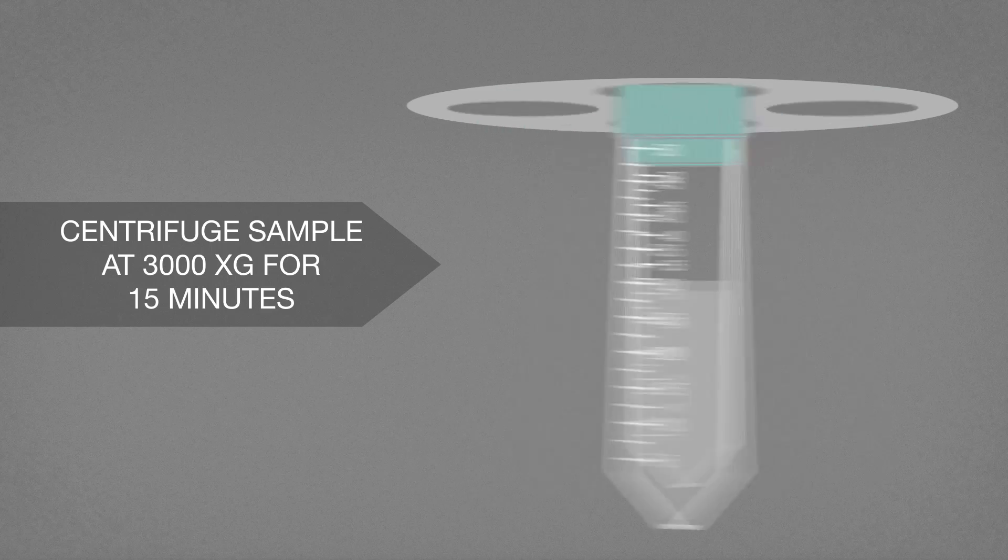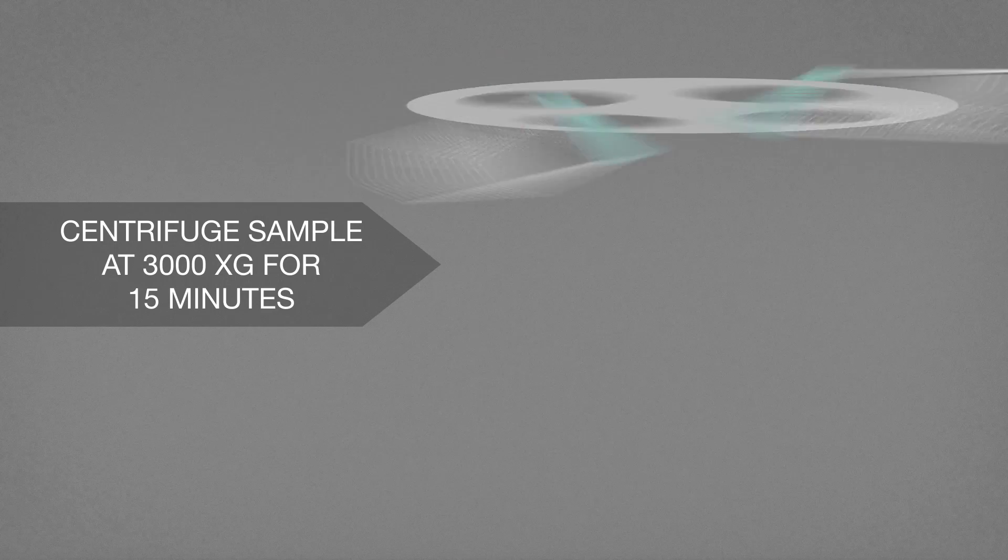Centrifuge the samples at 3000 XG for 15 minutes. Use a nomograph to convert RPM to XG.